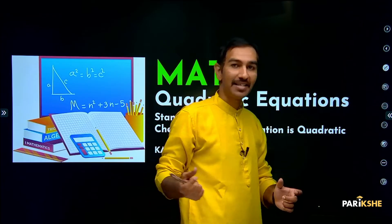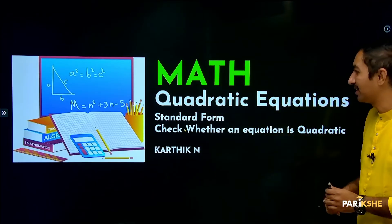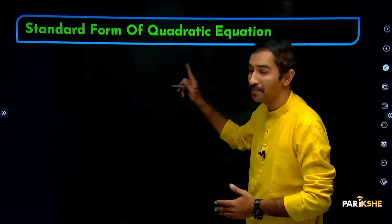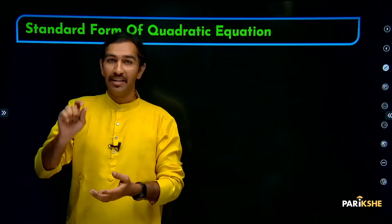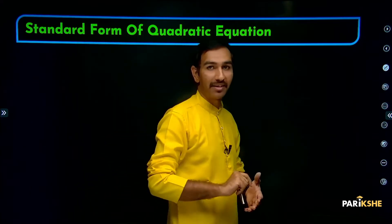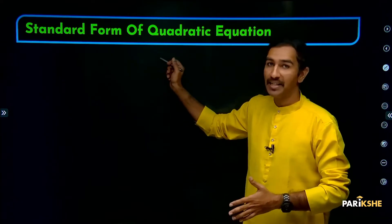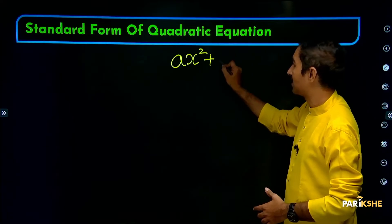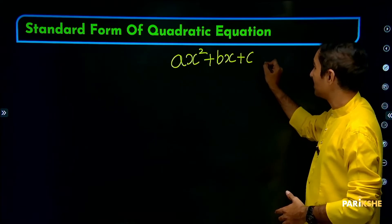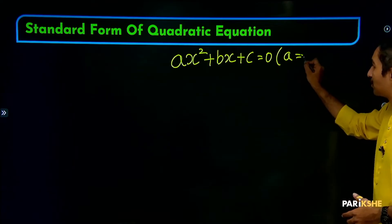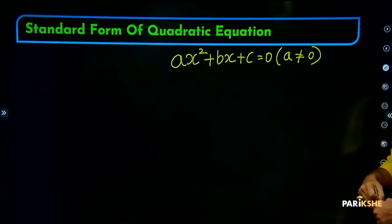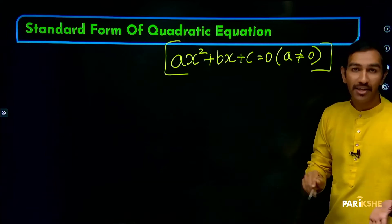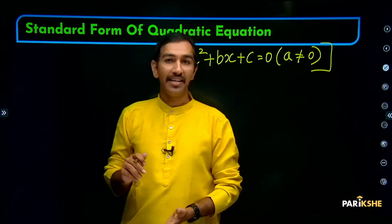An equation has a left-hand side and right-hand side with an equal sign. The standard form of the quadratic equation is written as: AX squared plus BX plus C is equal to 0, where A is not equal to 0. This is called the standard form of a quadratic equation.